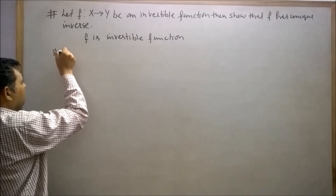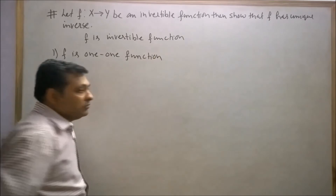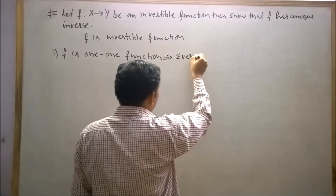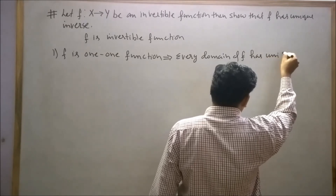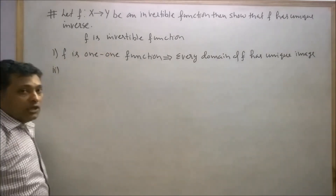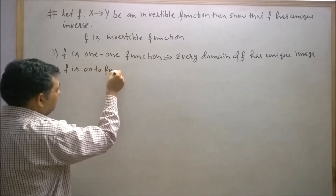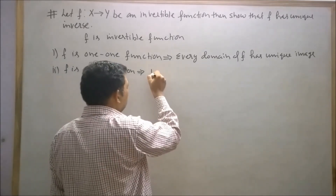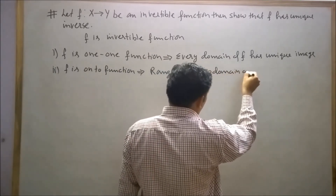Point number 1: Since f is invertible, then f will be a 1-1 function. In a 1-1 function, every domain element has a unique image. Point number 2: Since f is invertible, so it is also onto. In an onto function, the range of f is equal to the codomain of f.